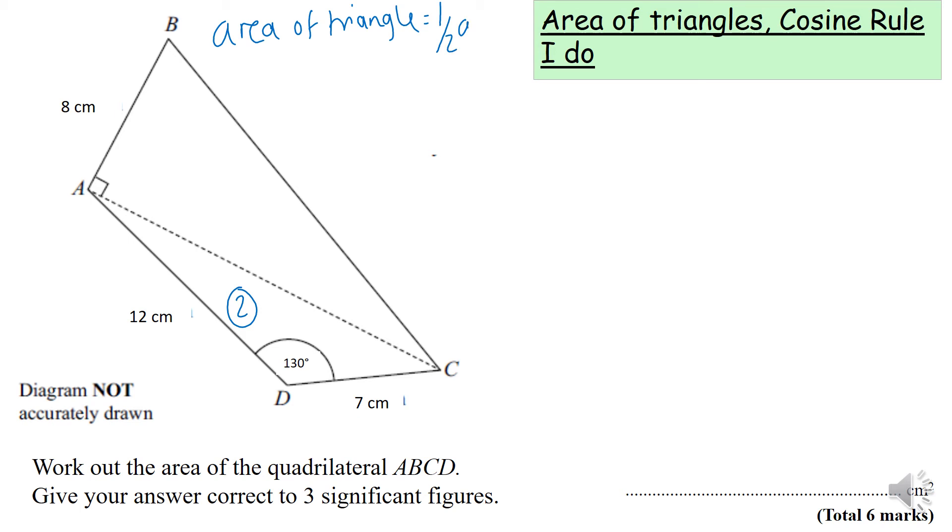We need to use the other formula for area of a triangle, which is half ab times sine C. If you have two lengths and the angle between them, you can use that to work out the area. A and b are the two lengths, and C is opposite the angle. So half times 12 times 7 times sine 130 degrees equals 32.17386661 centimeters squared.